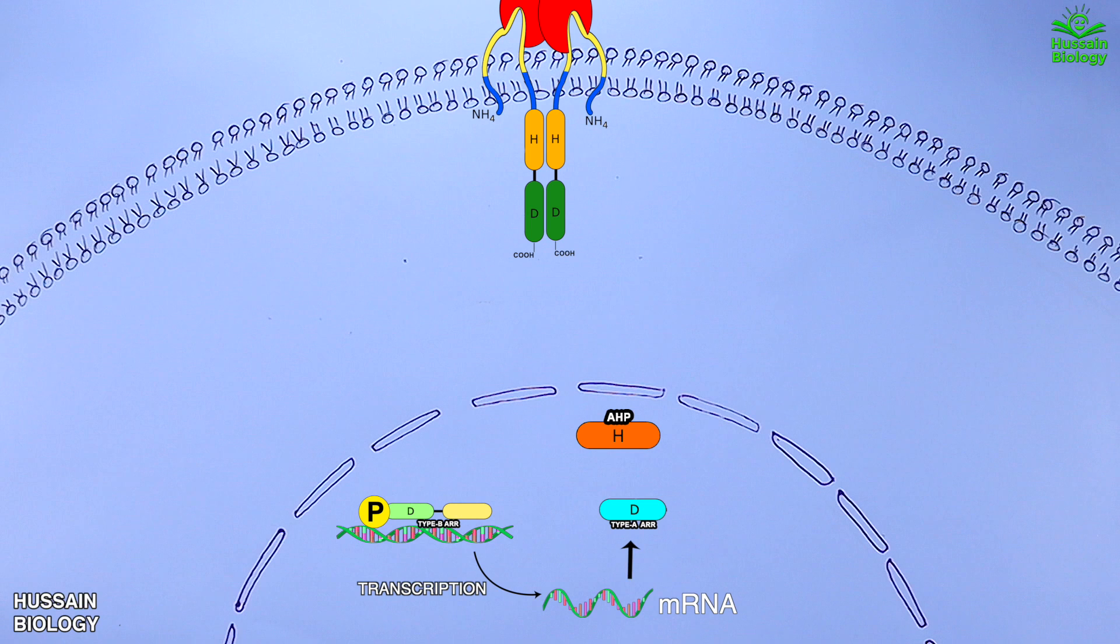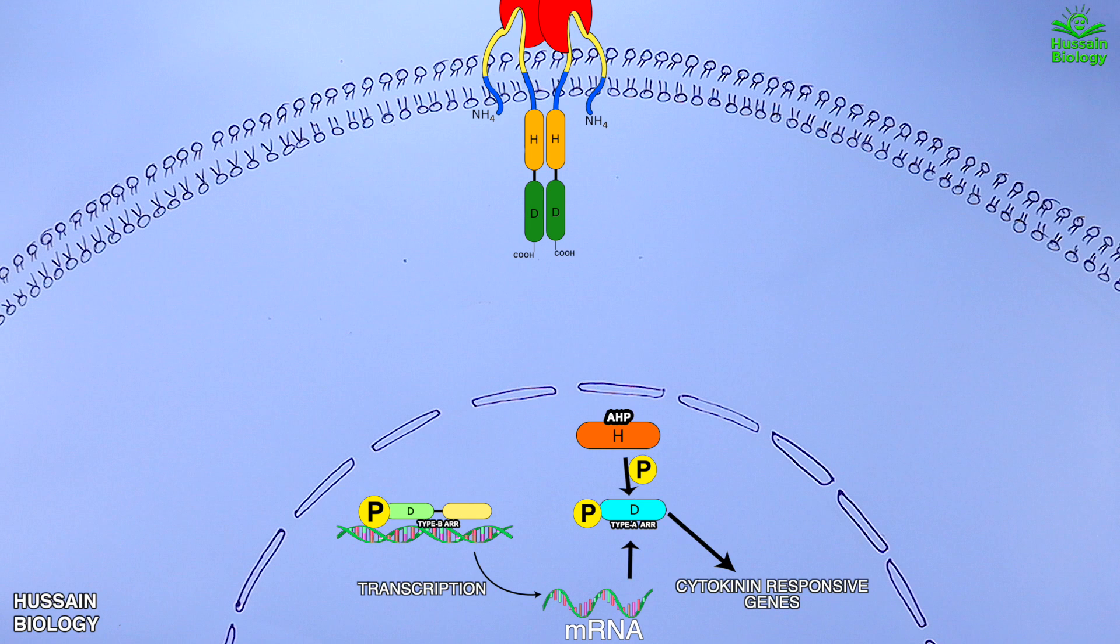Type A ARR protein also has got a receiver domain and it also gets phosphorylated by AHP protein as shown in the diagram. It's the ARR protein which actually regulates the cytokinin responsive genes. One thing to remember here is that this type A ARR protein forms a negative feedback loop with type B ARR, thus inhibiting its activity in a loop.